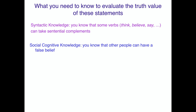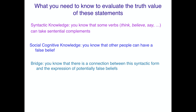You also need social cognitive knowledge — you need to know that other people can have beliefs, and those may be false beliefs if, for example, Hoggle didn't in fact betray her. These beliefs may or may not be true. The bridge is that there's a connection between this syntactic form and the expression of potentially false beliefs: if Hoggle didn't actually betray her but she thought he did, that's a false belief.